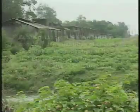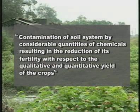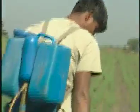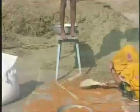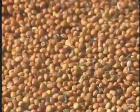Soil pollution can be defined as contamination of soil system by considerable quantities of chemicals resulting in the reduction of its fertility with respect to the qualitative and quantitative yield of the crops. These chemicals enter the food chain and impart toxic effects on the consumers. Presently, soil pollution is receiving greater attention due to its direct impact on public health. It is different from air and water pollution because the pollutants remain in direct contact with the soil for relatively longer periods of time and alter the biological and chemical properties of the soil. Naturally, these require more attention to study and control than any other type of pollution.